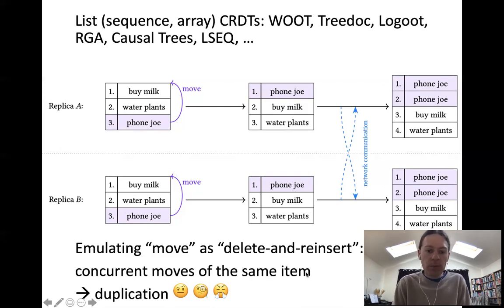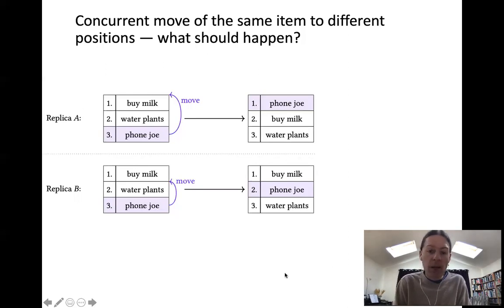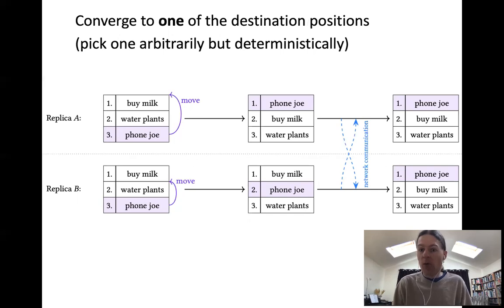So what do we want to have happen in this case? I've changed the example slightly—now replica A moves phone Joe to the head of the list while replica B moves phone Joe to be underneath buy milk. There's a conflict between these two operations moving the same item to two different positions. We don't want the item to appear at both destination positions because that would mean duplicating it. What we want the CRDT to do is pick one of the positions as the destination position of this moved item. We want to pick one of the destination positions arbitrarily but deterministically. In this case, the algorithm has picked the higher position as the final merged outcome. It would be equally good to have the middle position, but it has to be deterministic.